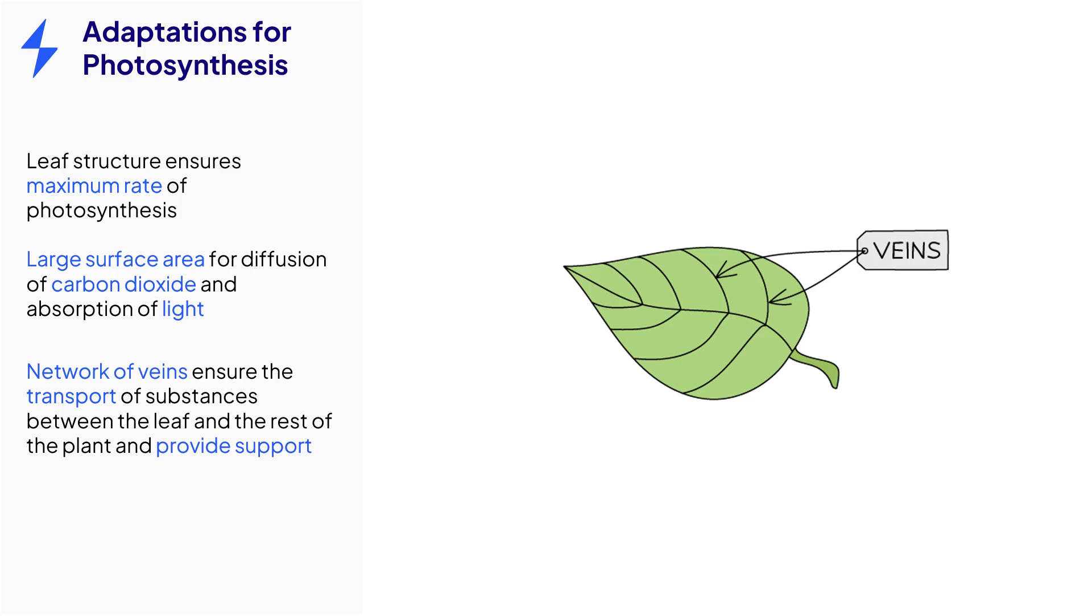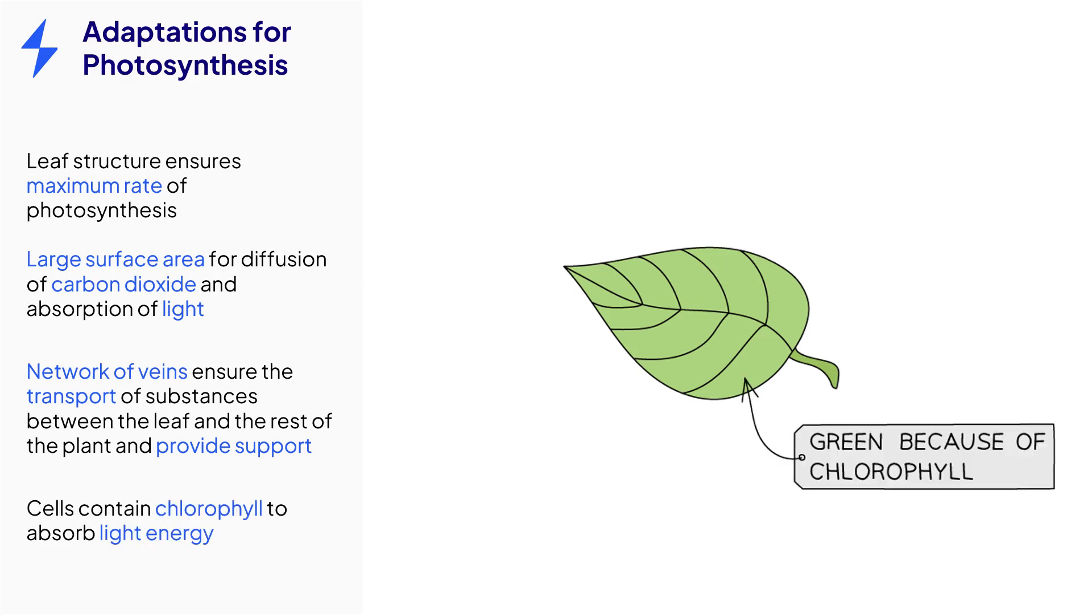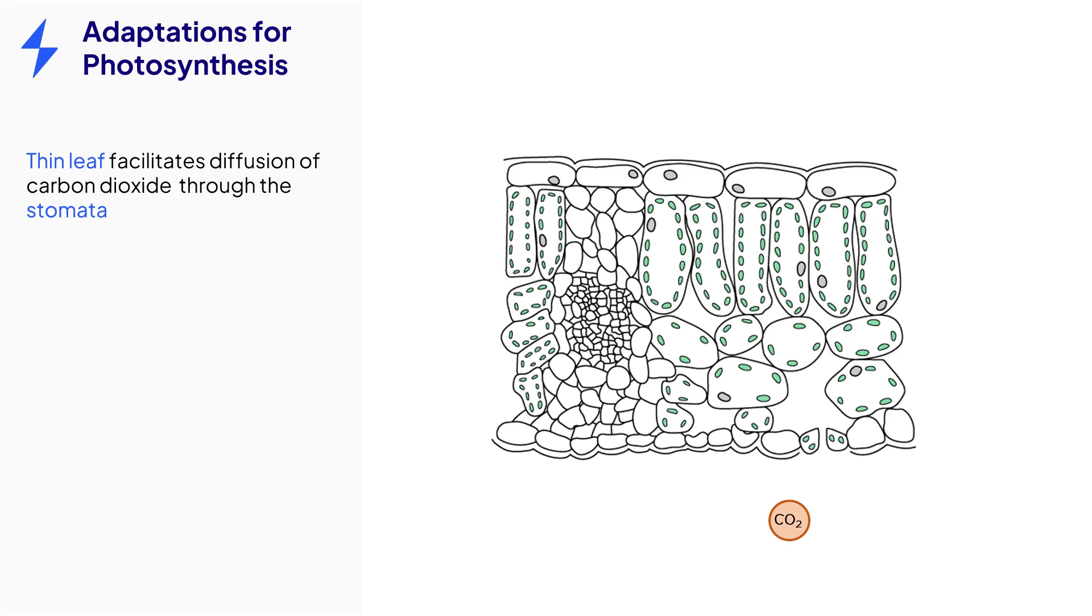The veins contain vascular bundles which consist of tissue with thick cell walls to support the leaf and stem. The cells of the leaf contain chlorophyll that will absorb light energy so that photosynthesis can take place. The leaf is thin to allow carbon dioxide to quickly diffuse to the palisade mesophyll cells through the stomata. Air spaces between the spongy mesophyll cells increase the surface area to ensure that carbon dioxide reaches the mesophyll cells as quickly as possible.